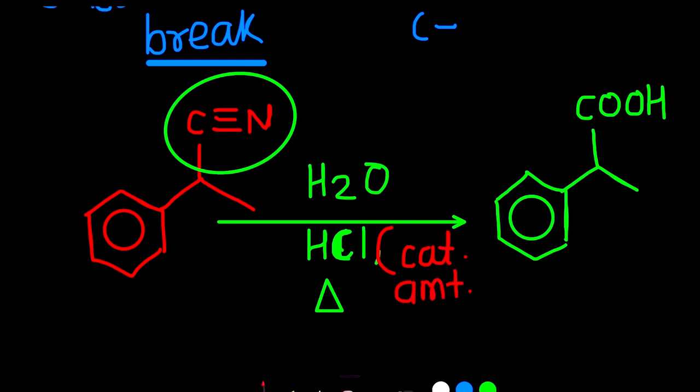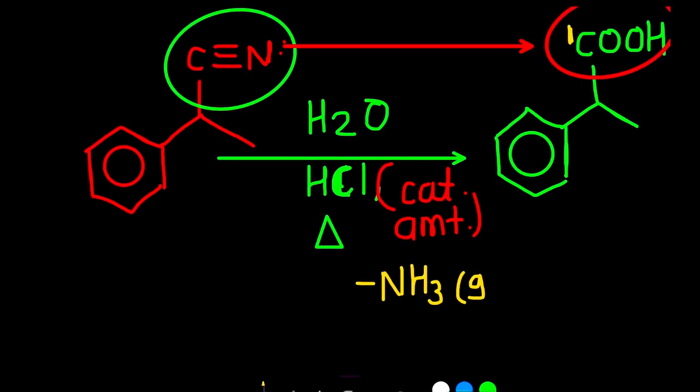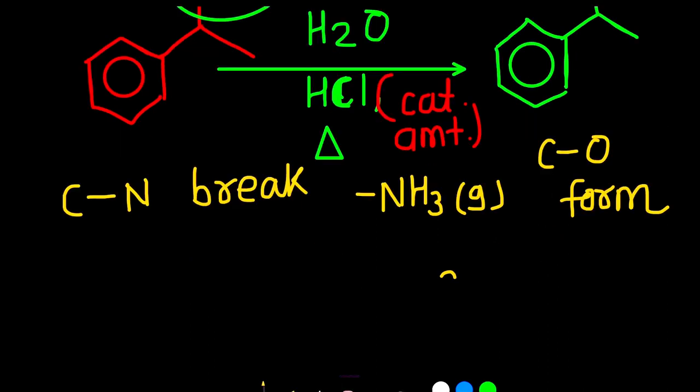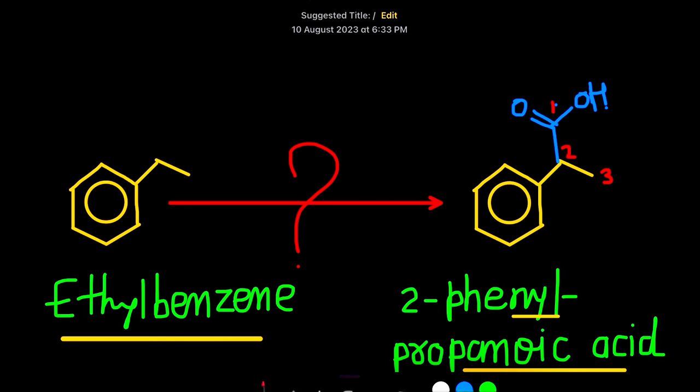That means we use HCl in minor amount. Ammonia will be released. Here, carbon-nitrogen bond breaks and carbon-oxygen bond forms to give 2-phenylpropanoic acid.